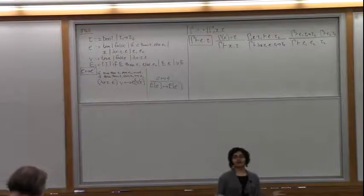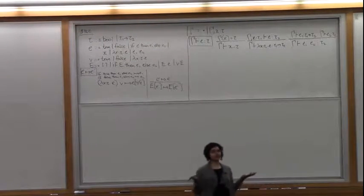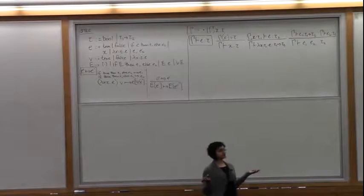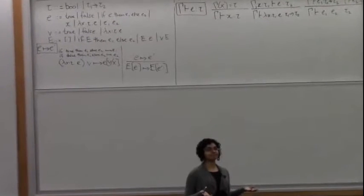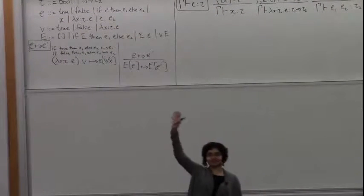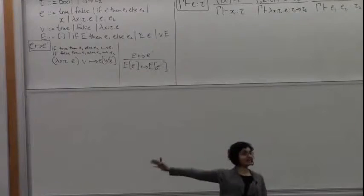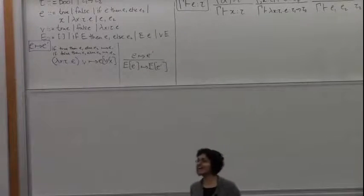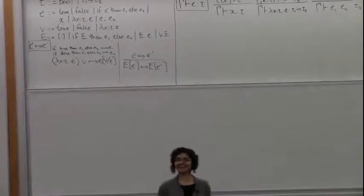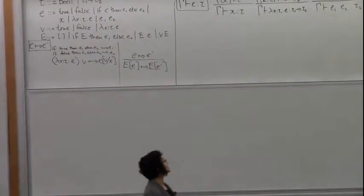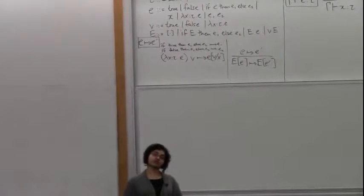I assume that everyone here has done a proof of type soundness or type safety for simply typed lambda calculus using progress and preservation. So we're going to prove type safety today using logical relations.